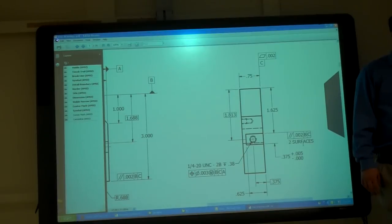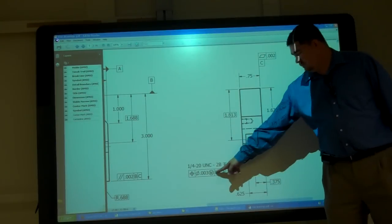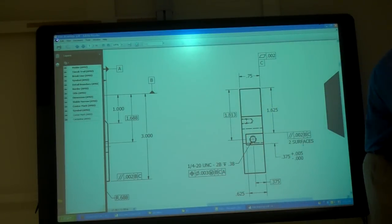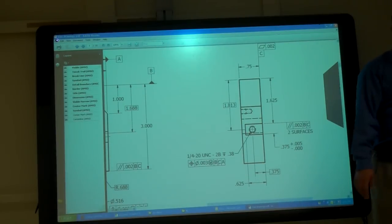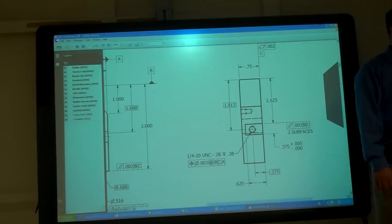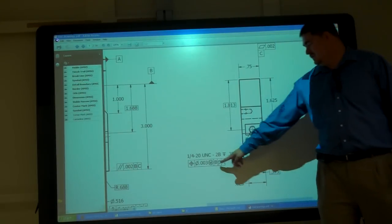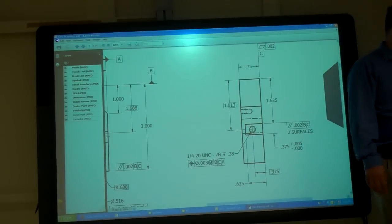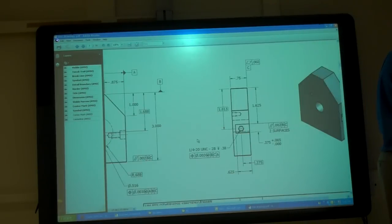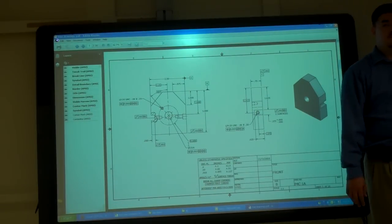So questions on adding the GD&T? So basic dimension, feature control frame. Does the order of the letters matter? No, I guess not. Yes. It matters a lot. So make sure you get the letters in the right order.